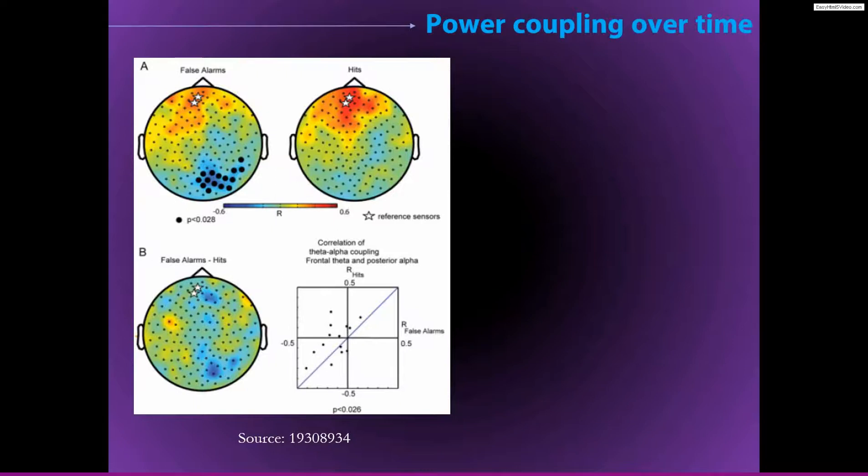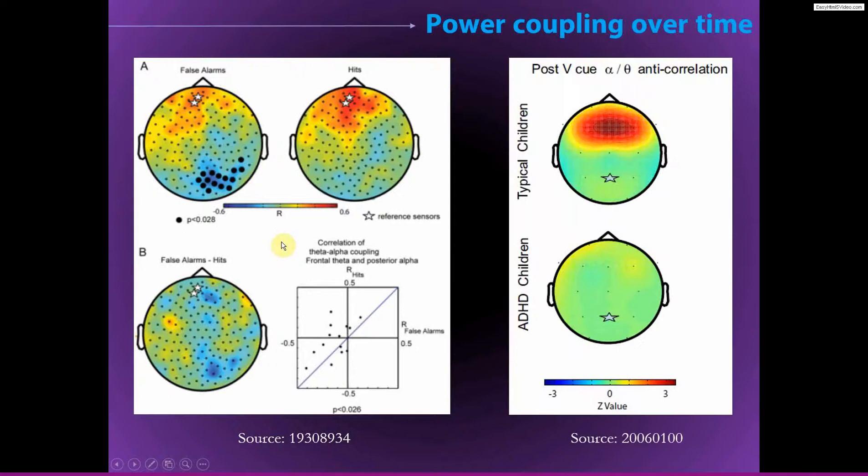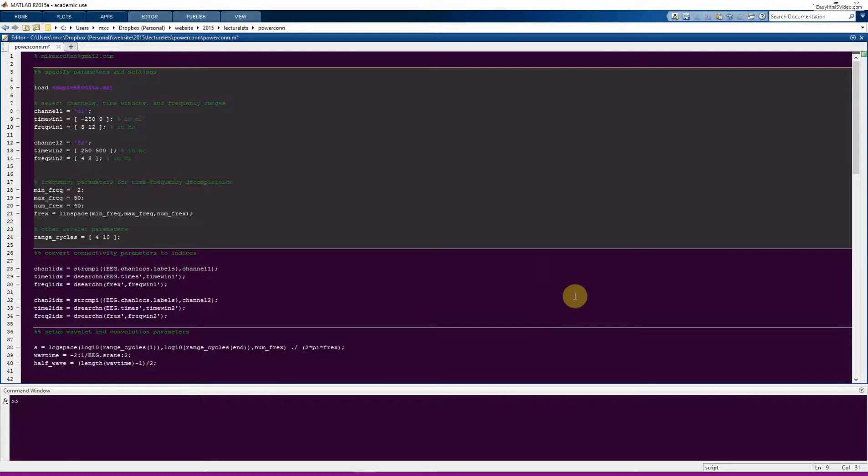So here's just a few examples of exactly this analysis applied in the literature. Here they found that posterior alpha correlates with frontal theta. And these correlations differed according to performance on this simple perceptual task. Here's another study with the same analysis method where they showed that in typically developing children, there's again this correlation between posterior alpha and frontal theta. And this correlation seems to be absent in ADHD children. Okay, let's have a look at MATLAB.